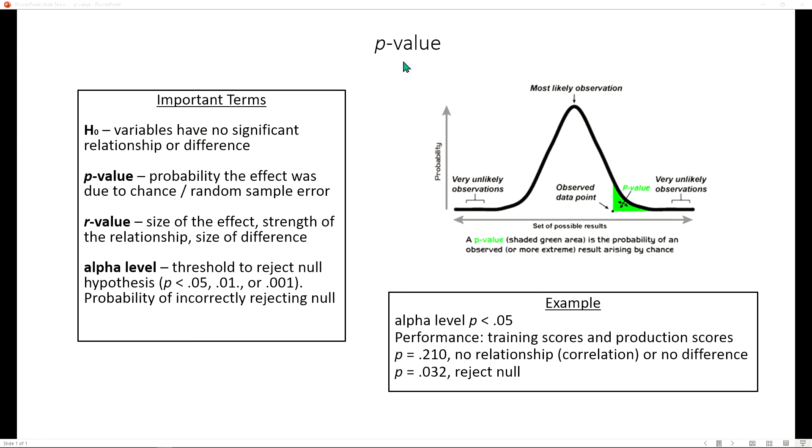I will now address the concept of a p-value. A null hypothesis is basically stating that the variables have no significant relationship or difference. If we do find that there is a statistically significant relationship or difference, then we reject that null hypothesis and go from there and look at the effect size.